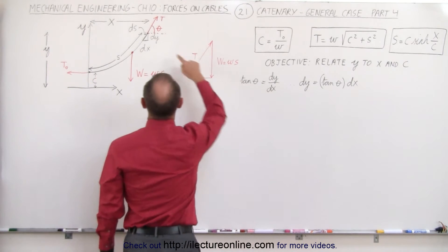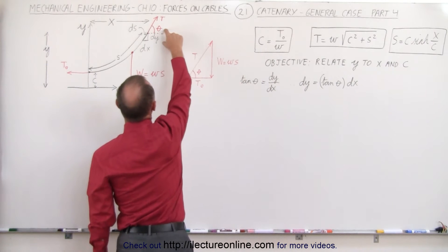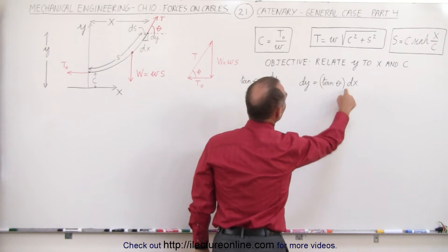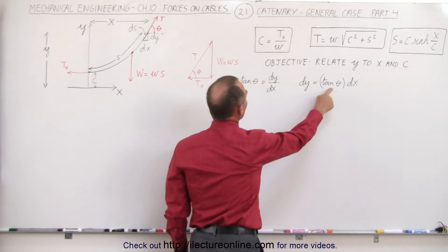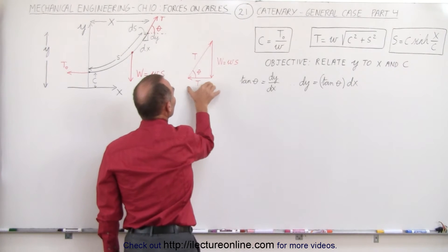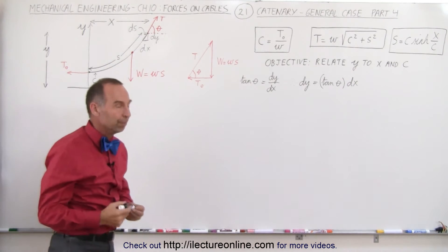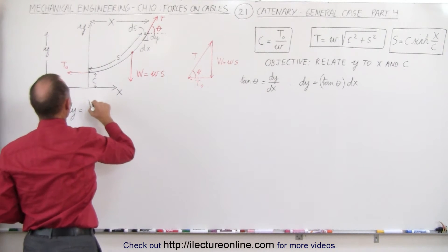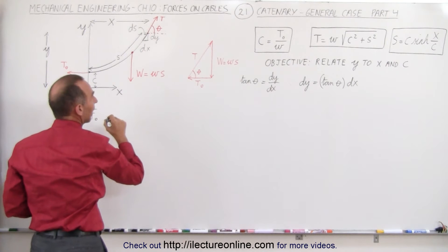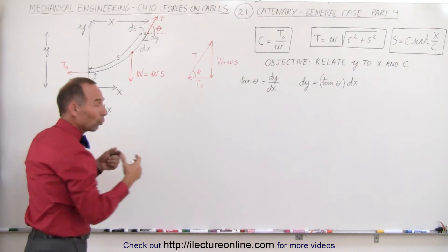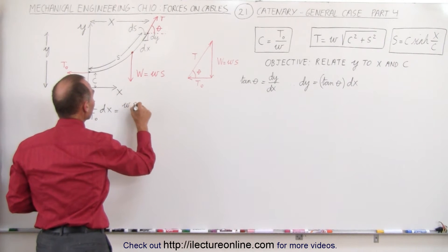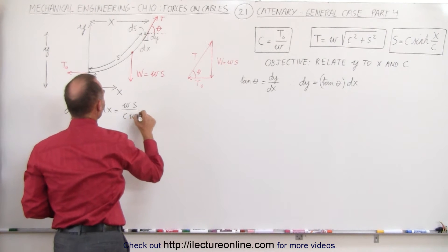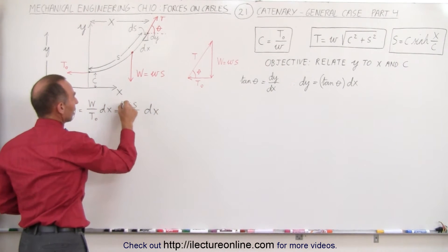We start with the concept that the tangent of the angle theta is the ratio of the opposite side over the adjacent side, dy divided by dx. If we solve that for dy, we get the tangent of theta times dx. We're going to express the tangent of theta in terms of the opposite side over the adjacent side when we consider the three forces acting on a section of cable. That means dy is equal to the tangent of theta, which is W divided by T-sub-naught, times dx. W, the total weight of the cable, is equal to the weight per unit length times the length of the cable. T-sub-naught can be written as C times the weight per unit length, and the weight per unit length cancels out.